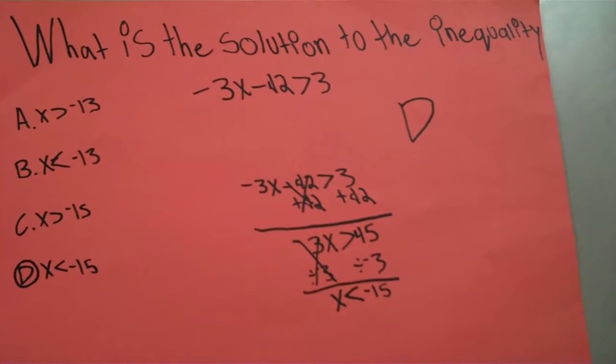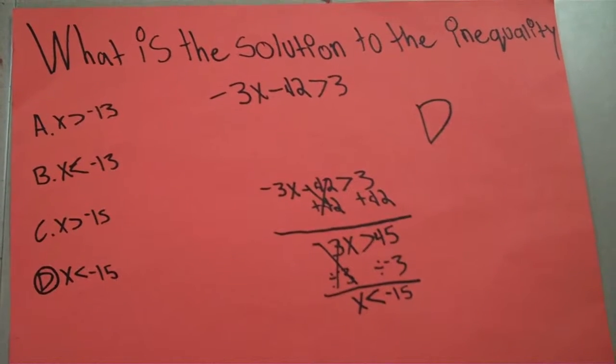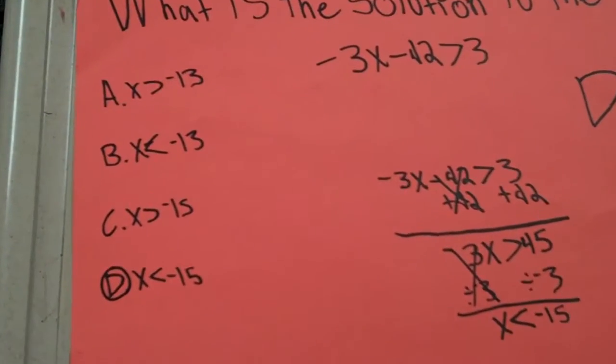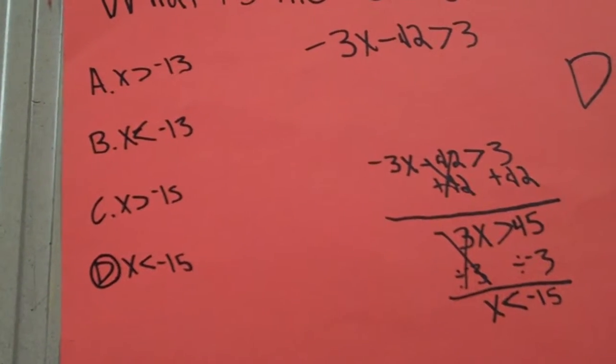What is the solution to the inequality? A: X is greater than negative 13. B: X is less than negative 13. C: X is greater than negative 15. And D: X is less than 15.